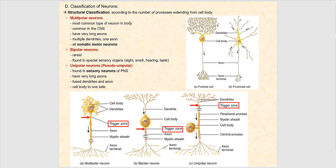Now let's look at the structural classification of neurons. We begin with the multipolar neuron — the most common type, very common in the central nervous system. All somatic motor neurons that control skeletal muscles are structurally multipolar. The multipolar neuron has many dendrites but only one axon. The arrow pointing toward the synaptic knob, also called the axon terminal, indicates the direction of the action potential.